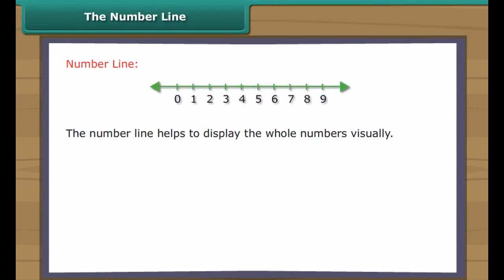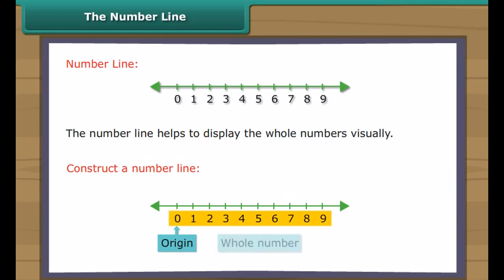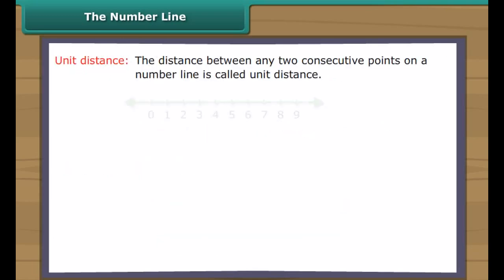The number line. The number line helps to display the whole numbers visually. To construct a number line, we simply draw a straight line and choose any point on the line and label it zero. This point is called the origin. We then choose some convenient length and moving to the right mark off consecutive intervals, or parts, along the line starting at zero. We label each new interval endpoint with the next whole number.